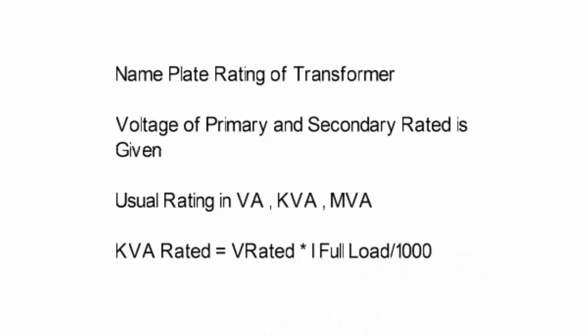Other parameters found on the nameplate of a transformer include its ratings. The transformer rating is given in volt-amperes — KVA for medium transformers and MVA for large transformers. The KVA rating is calculated by multiplying the rated voltage by the full-load current and dividing by 1000. If you found this video helpful, please subscribe, like, and comment.